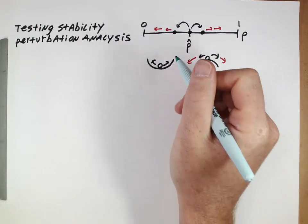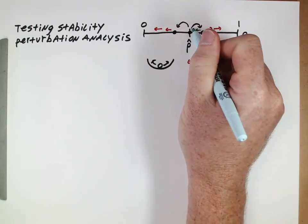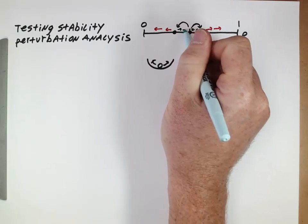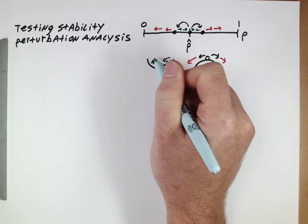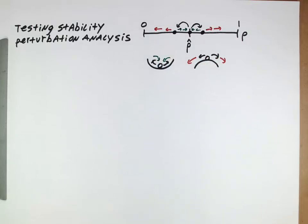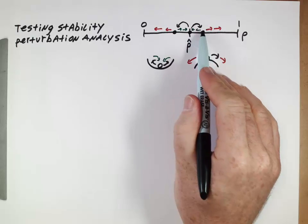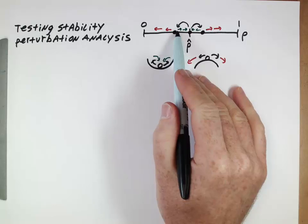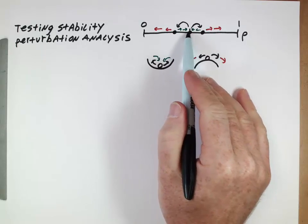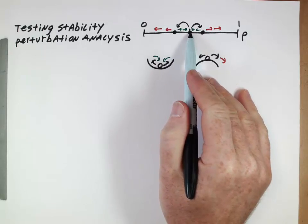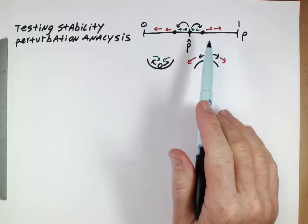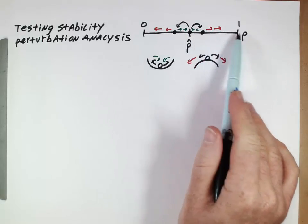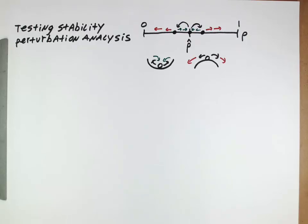Or when I nudge it, does it go back? So what we're interested in is: when we have an equilibrium frequency, if we make it a little bit bigger — maybe due to random chance — will it return? If we make it smaller, will it return? If it returns from both directions, this will be a stable equilibrium. If, on the other hand, a nudge sends it off, then that equilibrium would be unstable.